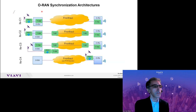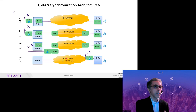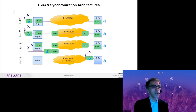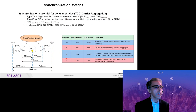This is the synchronization aspect. We know from Workgroup 4 the various LLS categories. This is becoming more complicated when we look at different aspects like shared ORU, shared cells, and different ownership models, but this is a very high-level view of synchronization.